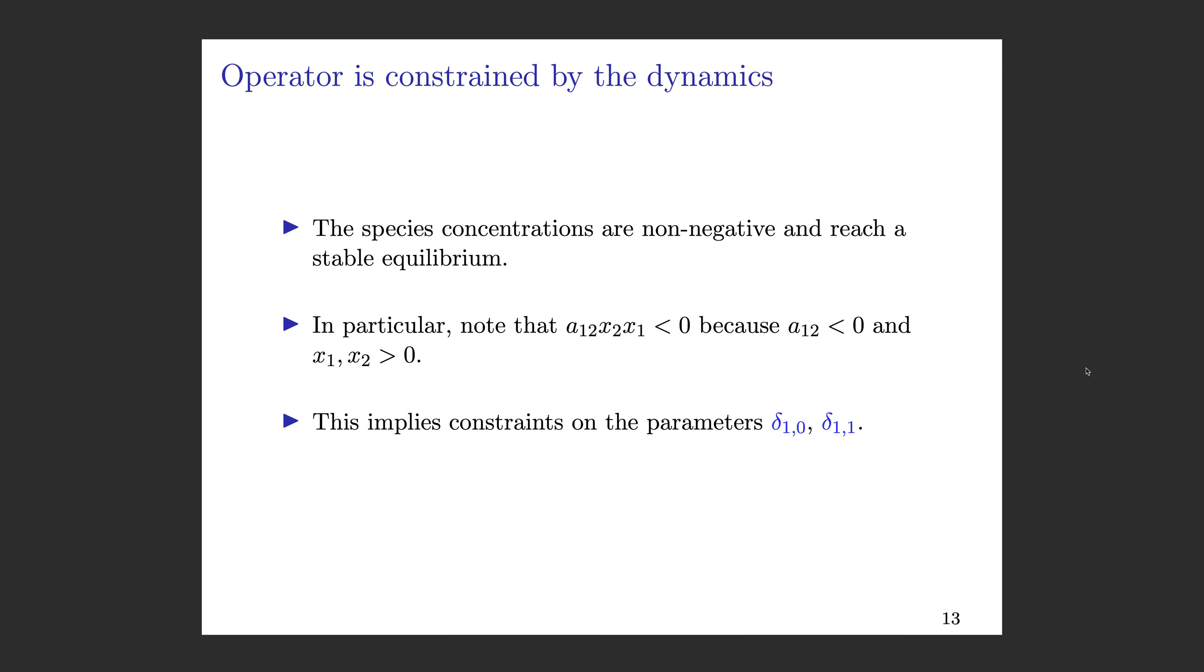Now how can we incorporate some information? In this case, we have information about our dynamics. We know that species concentrations are not negative, and we'll assume all our interactions are competitive, so these species reach a stable equilibrium. In particular, we know that all of the terms we're leaving out when we reduce from big S to little s are actually negative because the species are positive, but these interaction coefficients are all negative. All of this implies constraints on the parameters we include in this enrichment process.